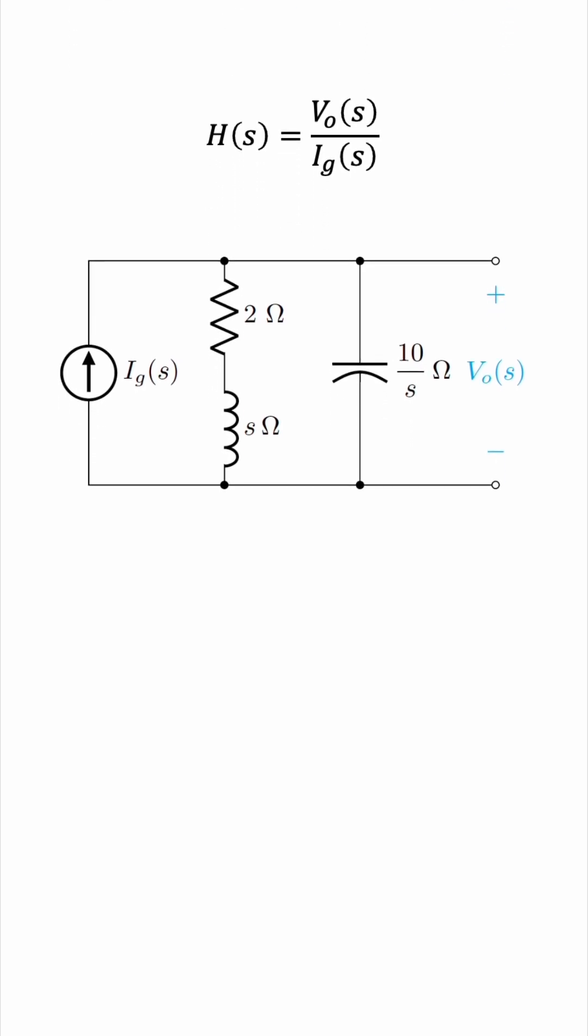To find VO in terms of IG, we can use current division, but for a change, I'm actually going to find the equivalent impedance of this circuit. We have the resistor in series with the inductor,